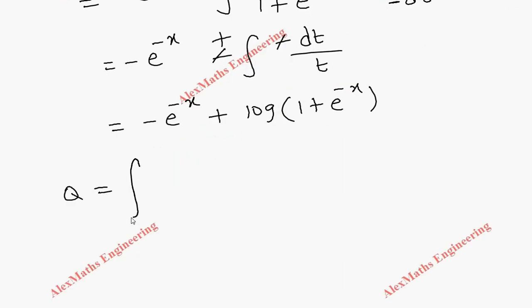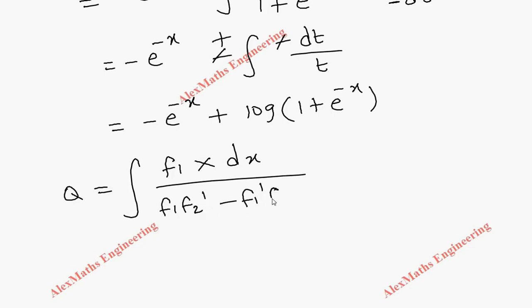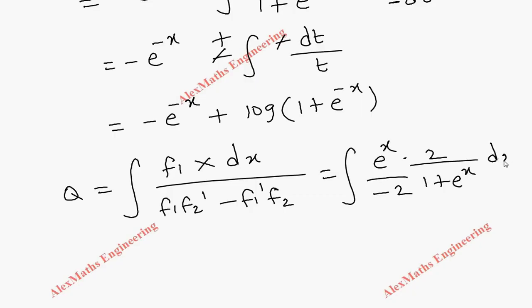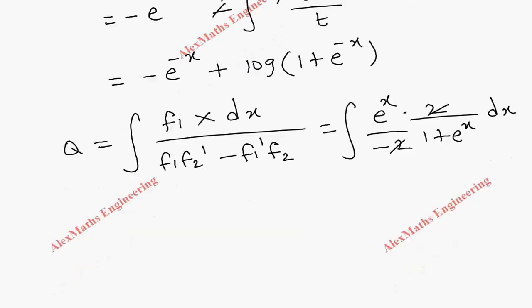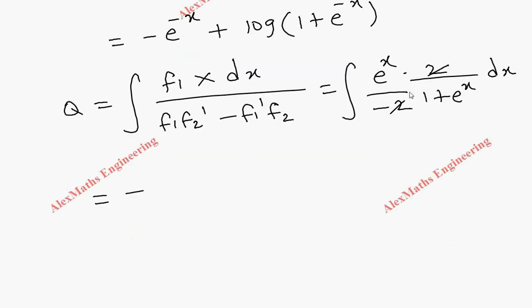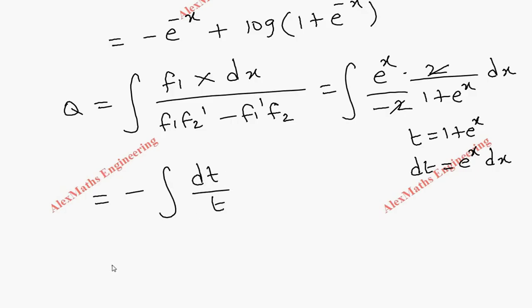For q, we use the formula q = ∫[f1·X / (f1·f2' - f1'·f2)] dx. Here f1 = eˣ and X = 2/(1 + eˣ), divided by -2. The twos cancel with a minus sign outside. Substituting t = 1 + eˣ, dt = eˣ dx, the integral becomes -∫dt/t = -log(t), giving q = -log(1 + eˣ).